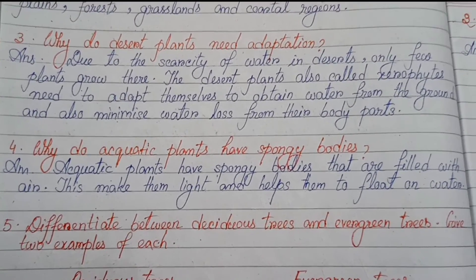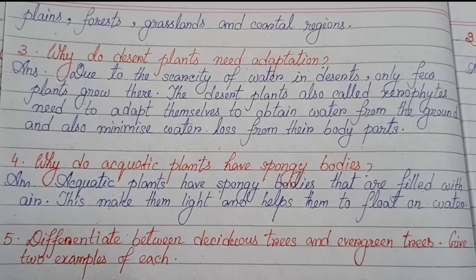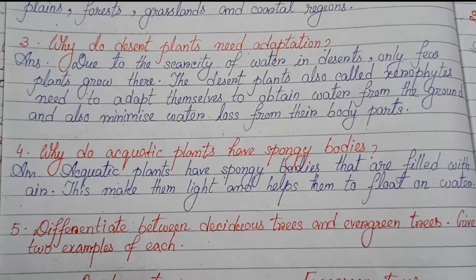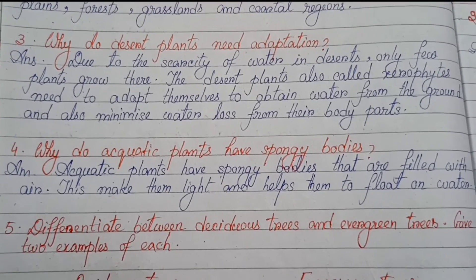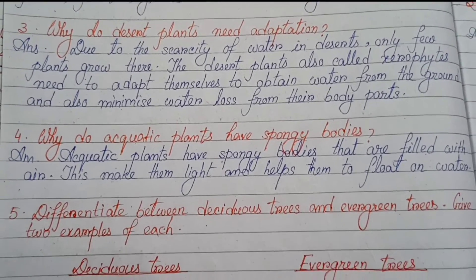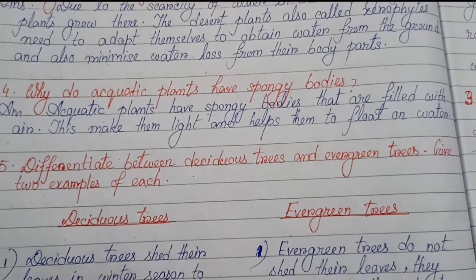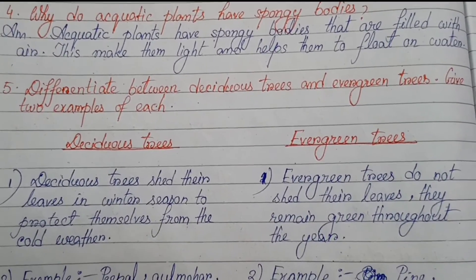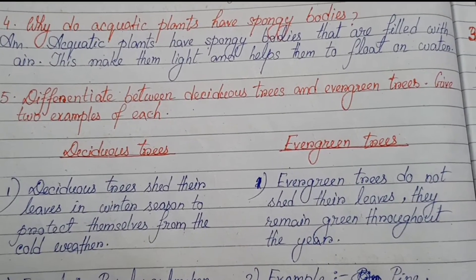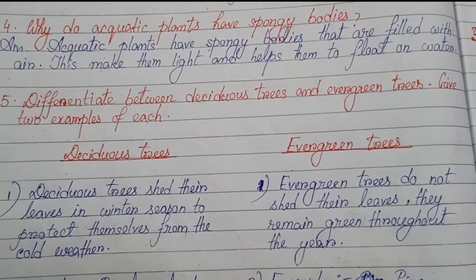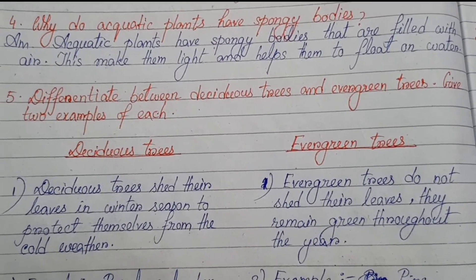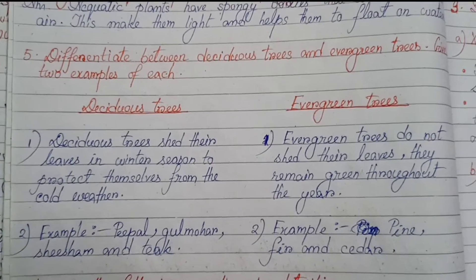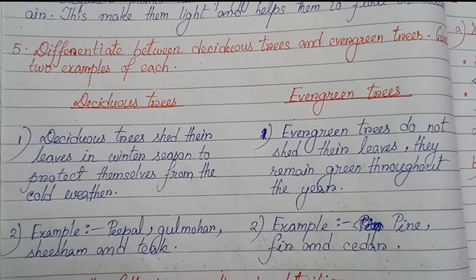Number four: why do aquatic plants have spongy bodies? Aquatic plants have spongy bodies that are filled with air. This makes them light and helps them to float on water.